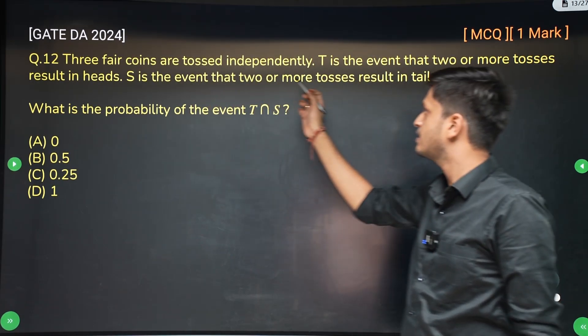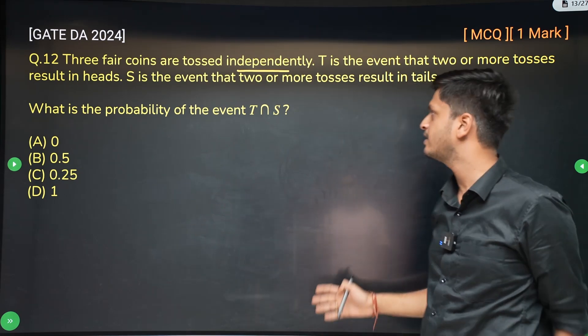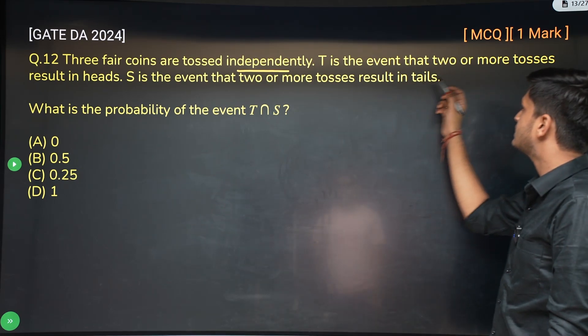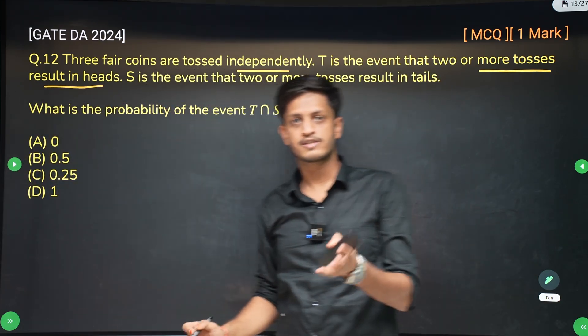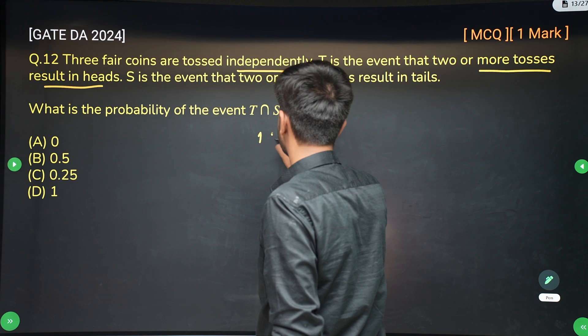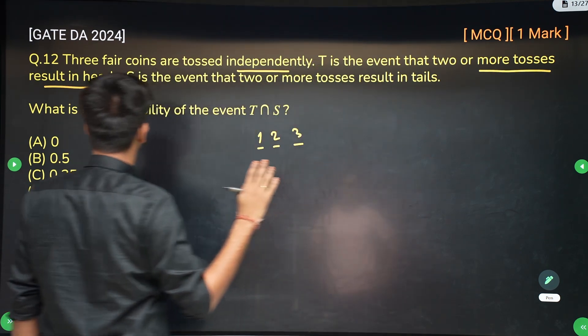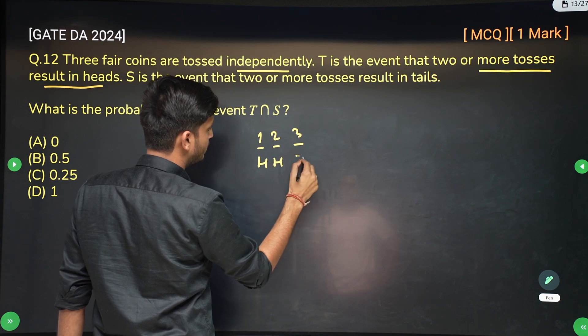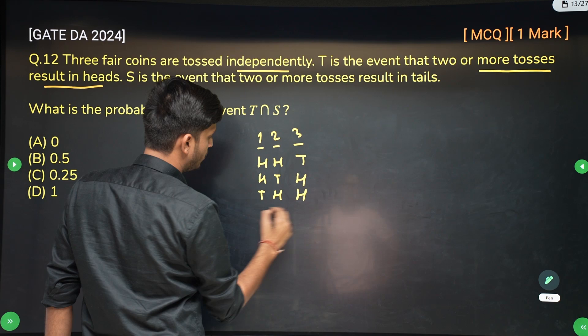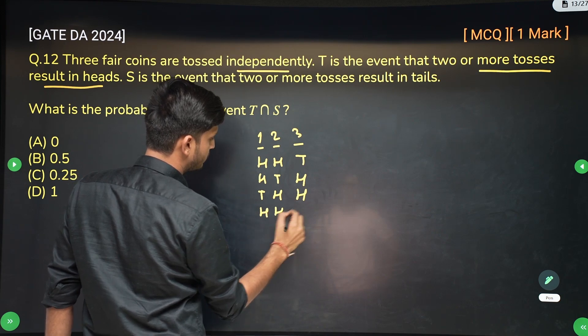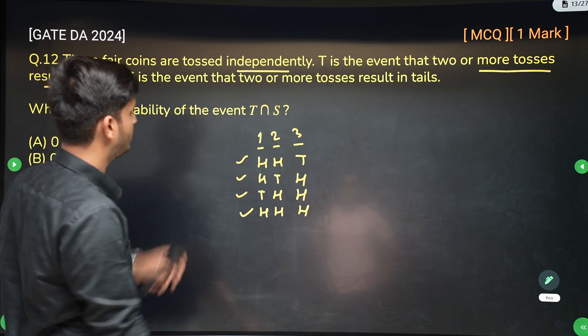So three fair coins are tossed independently. T is the event that two or more tosses result in heads. So there are three coins. T is the event in which you are getting either at least two heads, which means you are getting either head-head-tail or head-tail-head or tail-head-head or head-head-head. Either all three are heads or at least two of them are heads. So this is the event T.